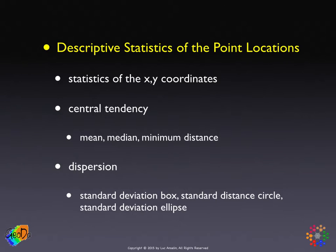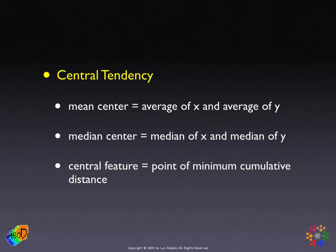A less traditional measure is the center of minimum distance, which is a point that optimizes access to all the other points. The measures of dispersion are based on the standard deviation and are visualized either as a rectangle — the standard deviation box — as a circle — the standard distance circle — or as an ellipse, the standard deviation ellipse.